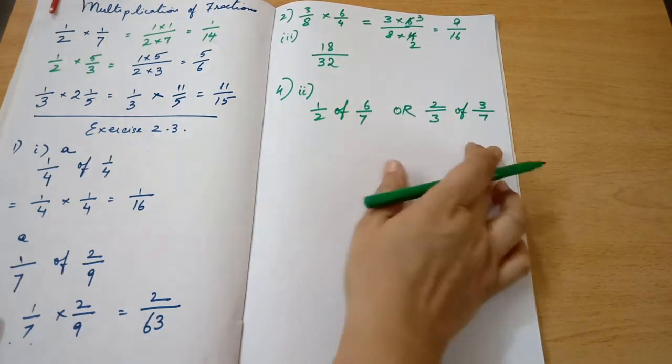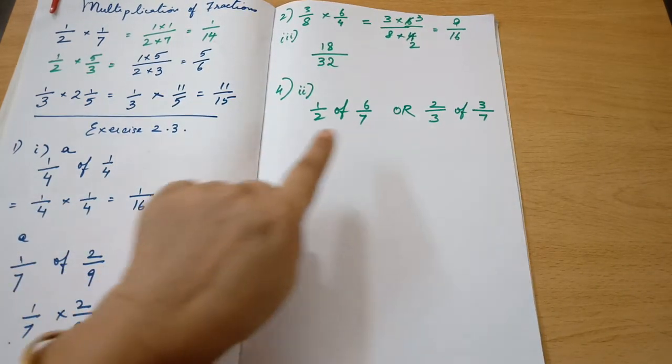Half of 6 by 7 or 2 by 3 of 3 by 7. The question is, which is greater?